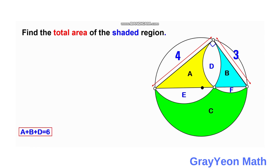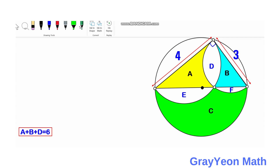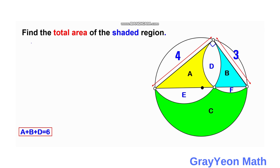Next, we can find the diameter of the semicircle with the green portion. Notice that it is the hypotenuse of the right triangle formed by regions A, D, and B. We simply use the Pythagorean theorem. Labeling this length as M, we have M squared equals 4 squared plus 3 squared, so M equals the square root of 16 plus 9, giving M equals 5 units.